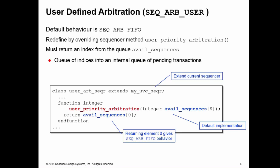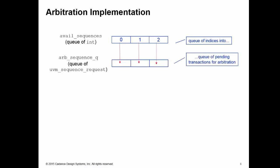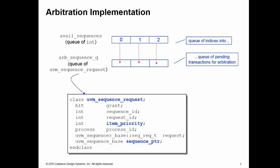Let's have a look at defining our own user_priority_arbitration method. To do this, we need to understand a little bit more about how the arbitration works. We need to return an index from avail_sequences. The avail_sequences is a queue of int — a queue of indices into another internal queue called arb_sequence_queue. This is a queue of UVM sequence request items, which is the queue of pending transactions currently available for the sequencer to select from. If you look at the definition of uvm_sequence_request, there are useful properties inside that class, particularly the transaction priority — the priority of the individual item waiting to be arbitrated — and also a handle on the sequence which generated that item.